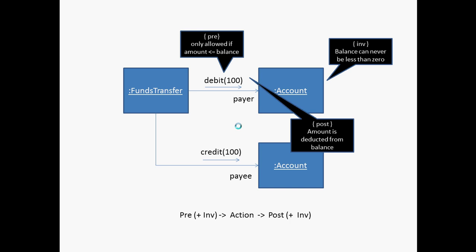A postcondition describes what should be true about the object when that method has executed successfully. A precondition describes the circumstances under which that method can be invoked and expect to be executed successfully.